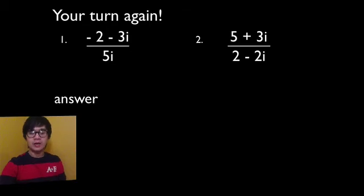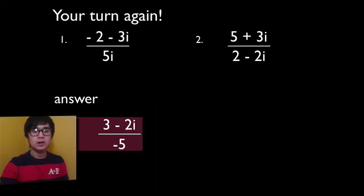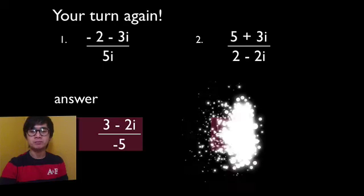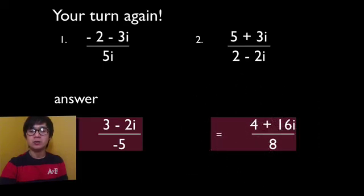Now, if your answer is correct, for number 1, your answer should be 3 minus 2i all over negative 5. And for number 2, most of you will answer 4 plus 16i all over 8.